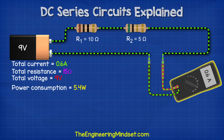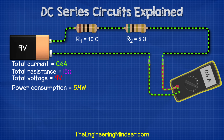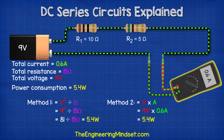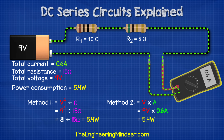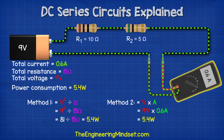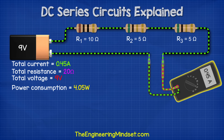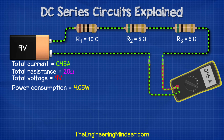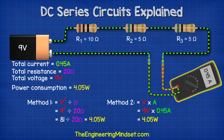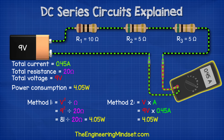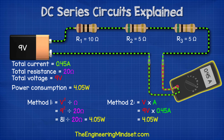In the third circuit with the 10 ohm and two 5 ohm resistors, the total resistance was 20 ohms and the current was 0.45 amps. So 9 volts squared is 81, divided by 20 ohms gives us 4.05 watts. Alternatively, 9 volts multiplied by 0.45 amps also equals 4.05 watts.